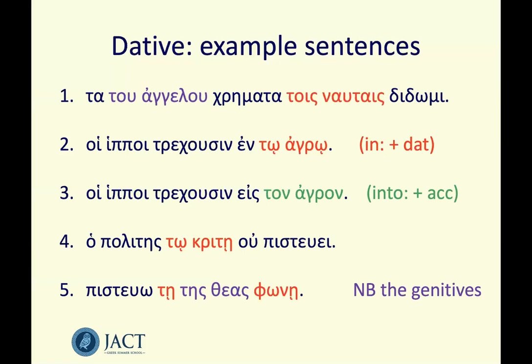Number four: 'ho politēs tōi kritēi ou pisteuei' — the citizen does not trust the judge. 'Kritēs' is one of those words which looks feminine but is actually masculine — hence it has an eta at the end which might trick you, but 'tōi' is the masculine dative article because 'kritēs' is masculine. Number five: 'pisteuō tēi tēs theas phōnēi' — I trust the voice of the goddess. There's a nice genitive there to practice what we were doing earlier.